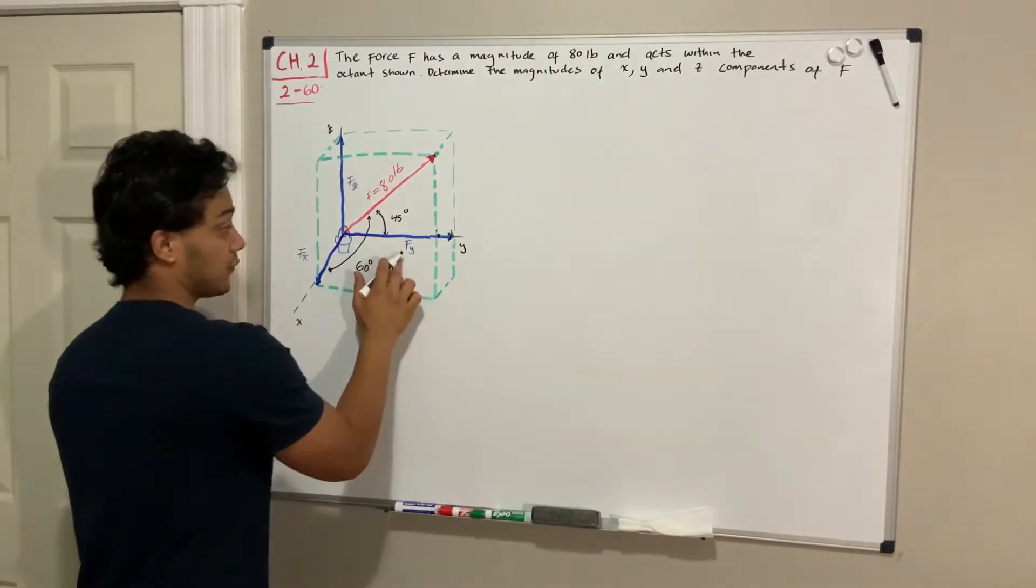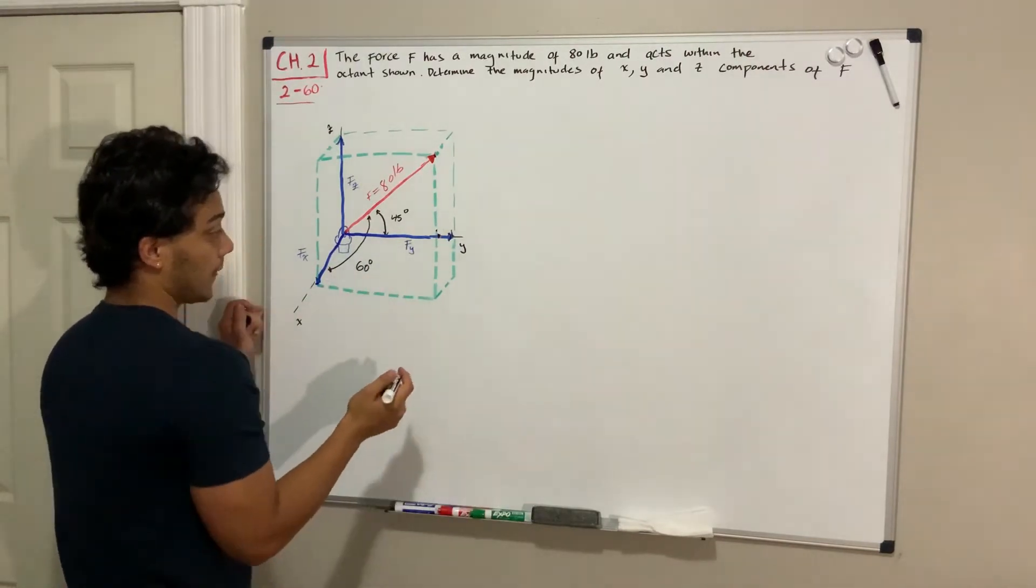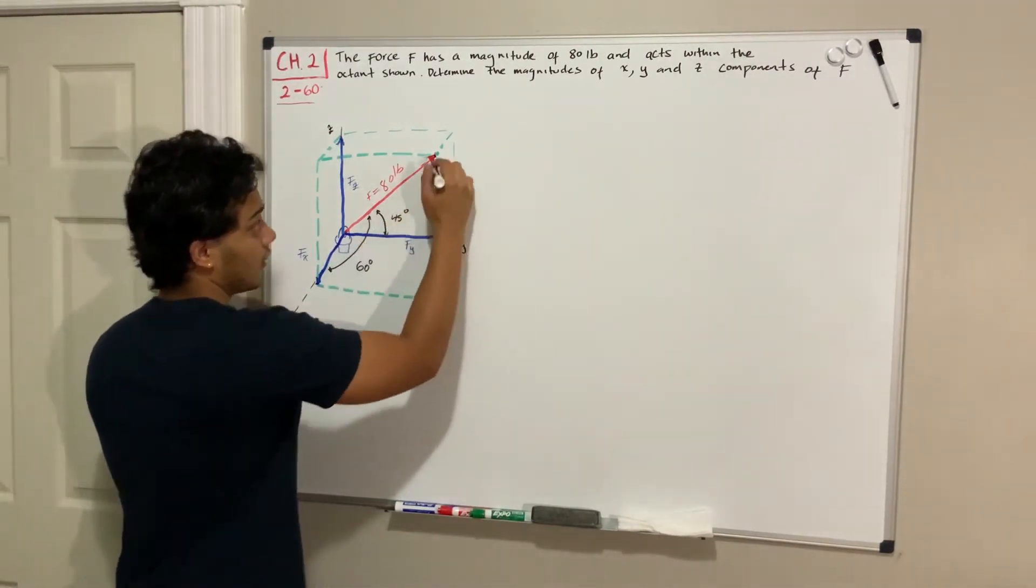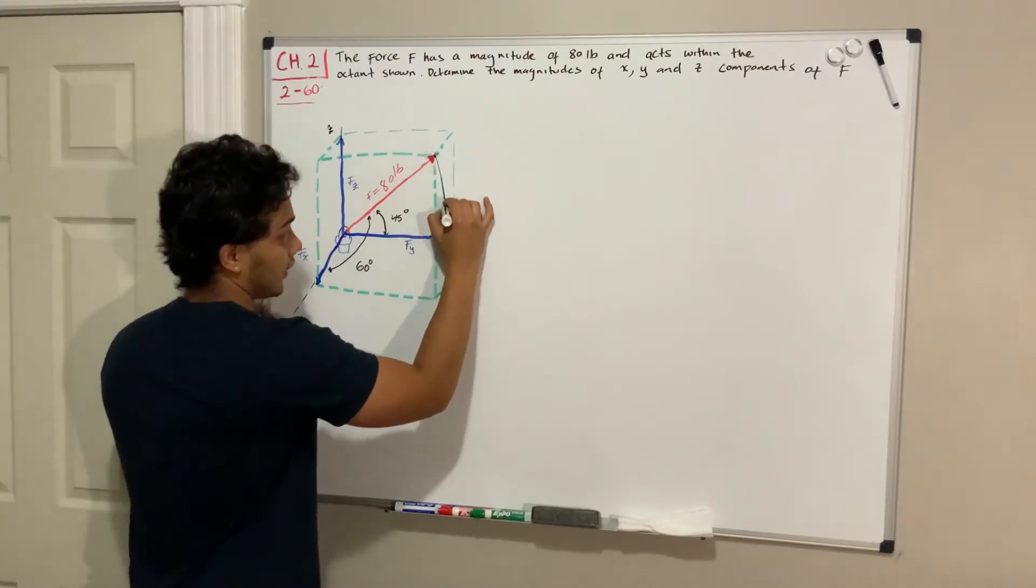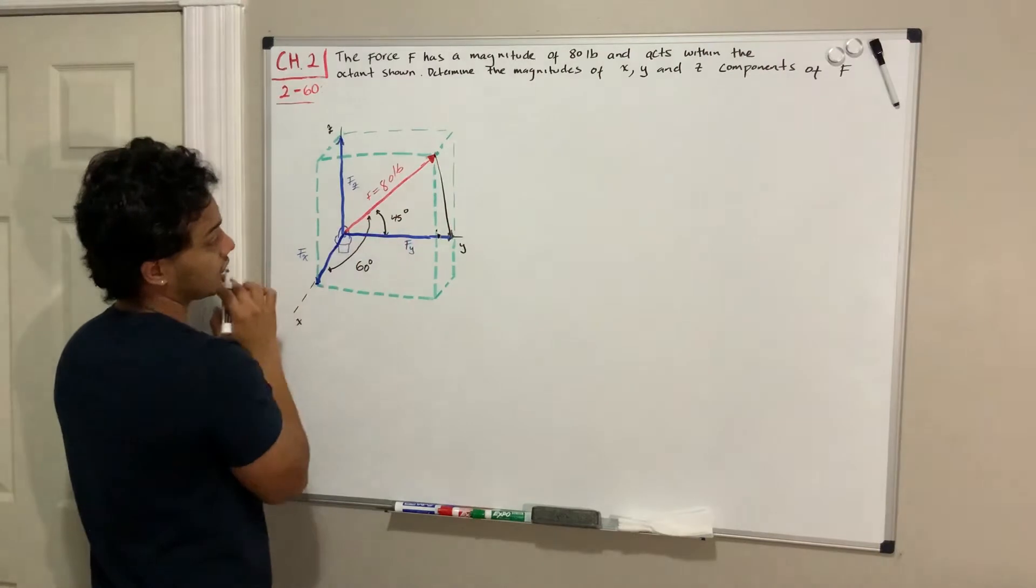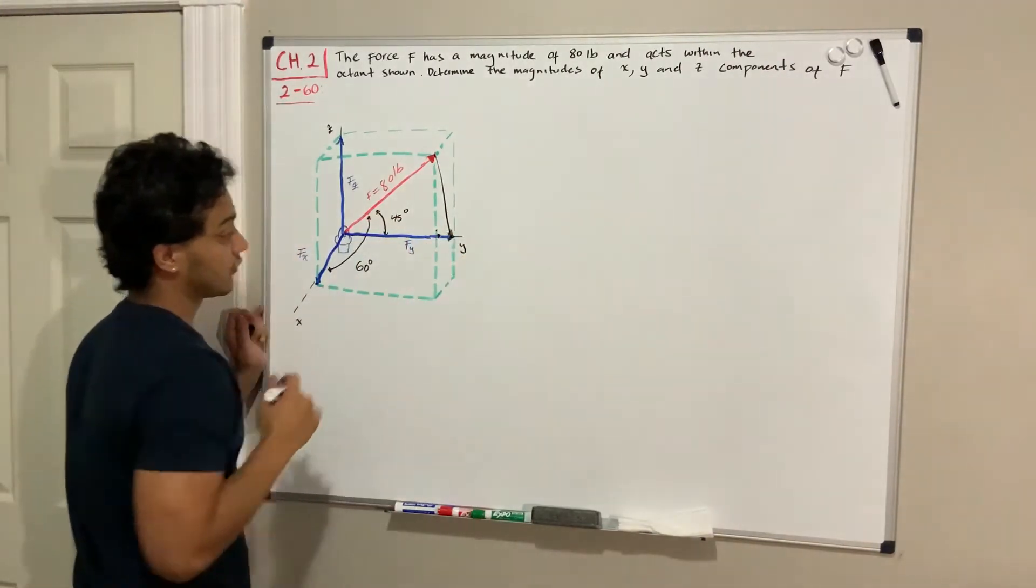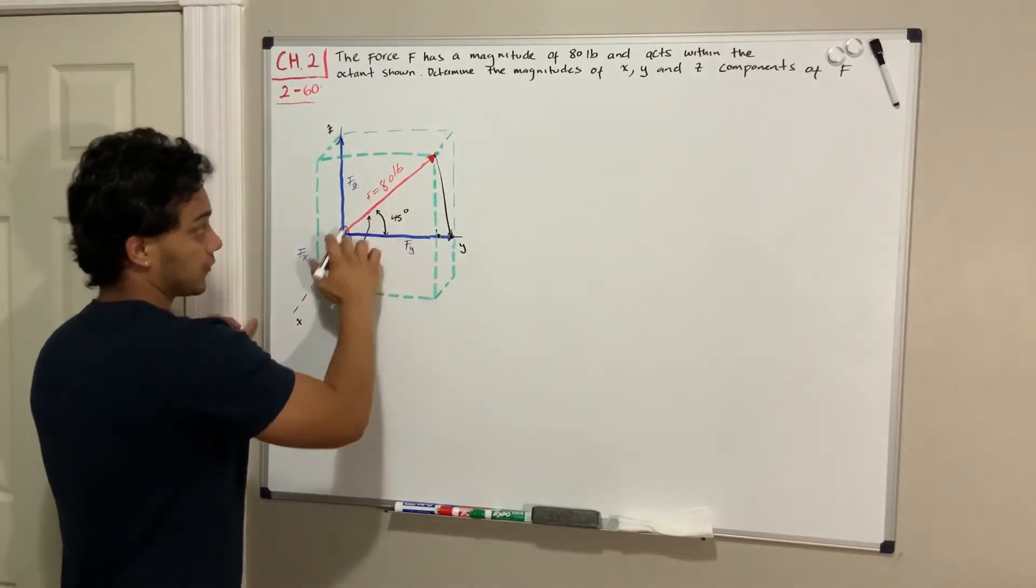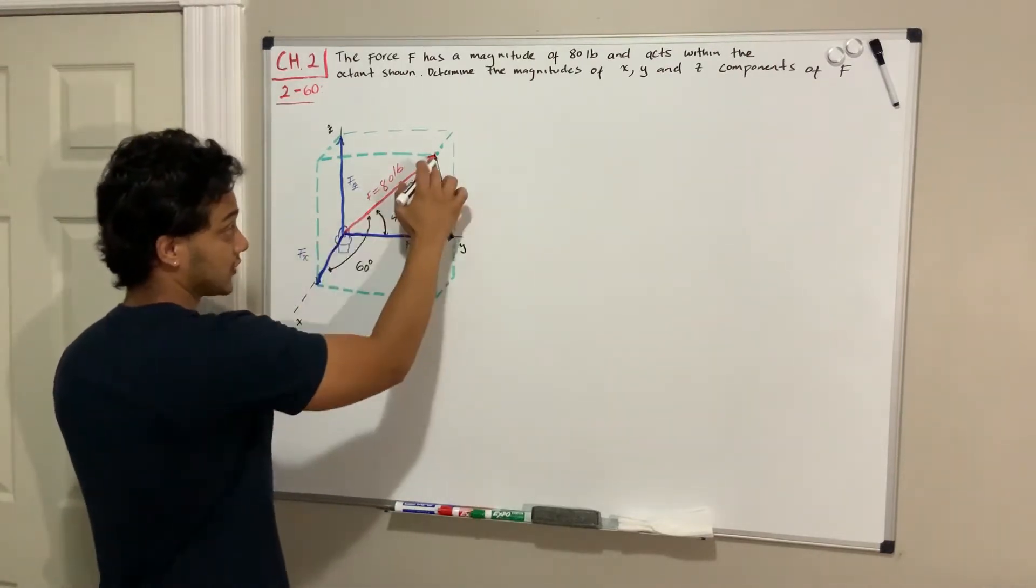Let's start for example with F of Y. So how do we find F of Y? With this angle, what it actually means is that if I draw a line from the tip of the force all the way to the tip of the force in the y-direction, I'm gonna have this right triangle.